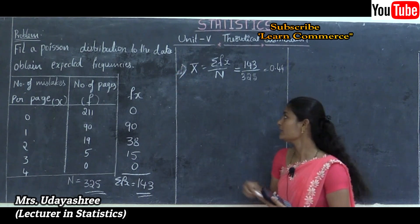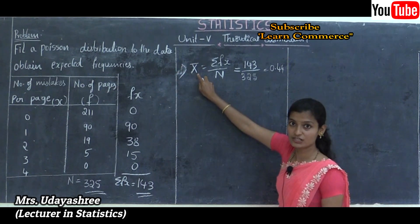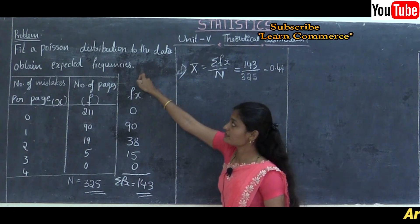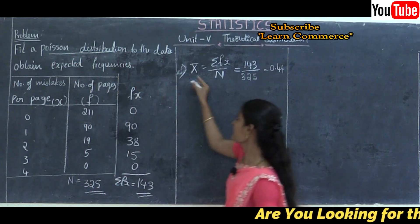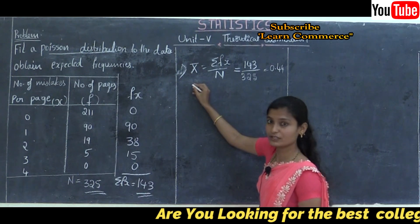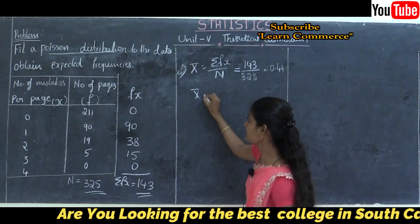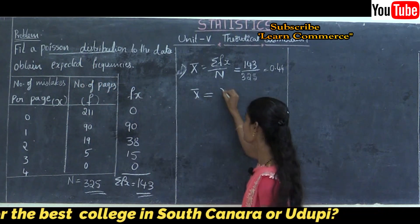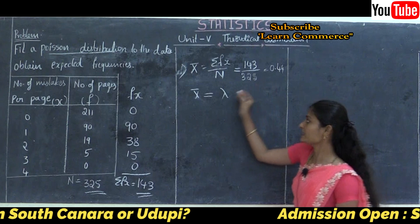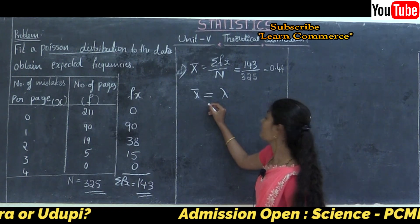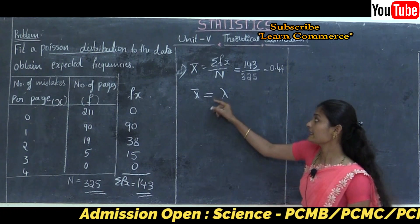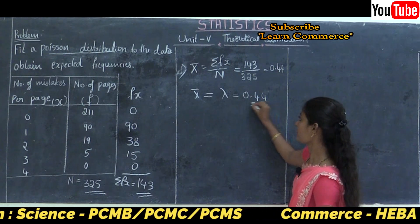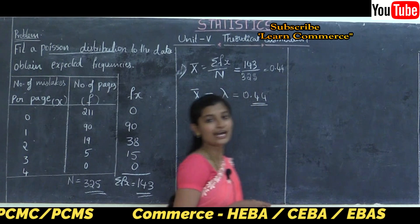Step 2: equate the mean of the observed frequency distribution with the mean of the Poisson distribution. We have X-bar = lambda. Since X-bar = 0.44, lambda is also 0.44.